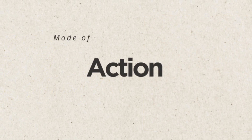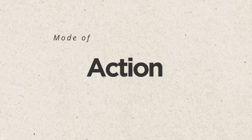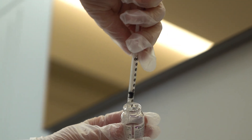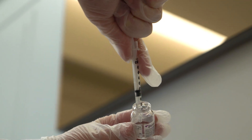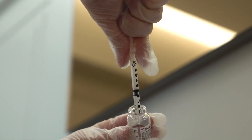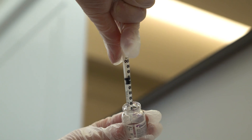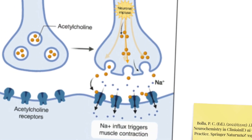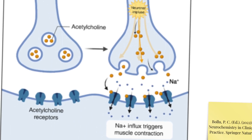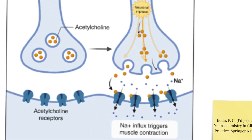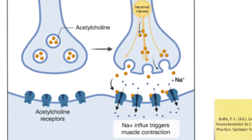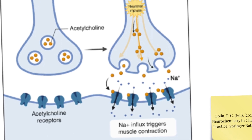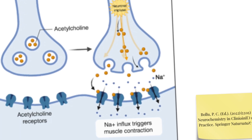Mode of action: how does botulinum toxin work at the cellular level? At the neuromuscular junction, nerve endings release acetylcholine, which binds to receptors on the muscle, triggering contraction. Botulinum toxin blocks this process by cleaving proteins essential for the release of acetylcholine — the SNARE complex. Without these proteins, the vesicles containing acetylcholine cannot fuse with the nerve terminal membrane, so the neurotransmitter is not released and the muscle cannot contract.